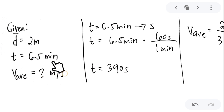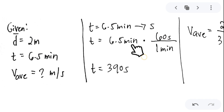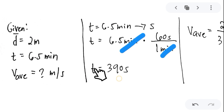The time is 6.5 minutes and we are looking for the average velocity in meters per second. Since we have minutes, it is more conventional to convert the minutes into seconds first. Converting 6.5 minutes into seconds: 6.5 minutes times 60 seconds per 1 minute — canceling the unwanted unit — gives us 390 seconds.